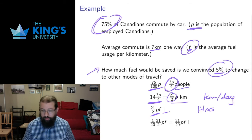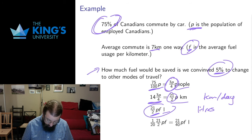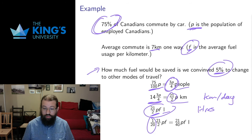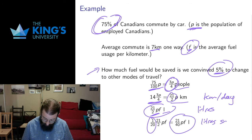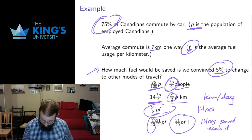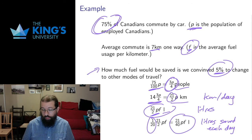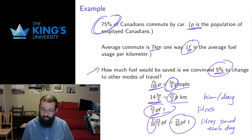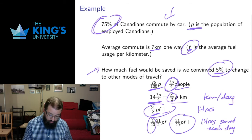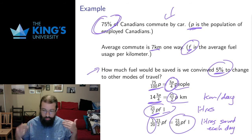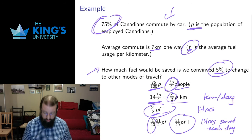Now the question is: what if we convince 5% of them to change? I want to know what 5% of the total fuel usage is. 5% is the same as 5 over 100, the same as 1 over 20. Multiplying 21 over 2 by 1 over 20 gives 21 over 40. So 21 over 40 times P times F is the number of litres saved each day. Again, you can see how we're taking a bunch of statements and turning them into mathematical symbols — based on what P and F actually are, we can calculate reasonably how much fuel is saved by this particular change in the behaviour of Canadians.